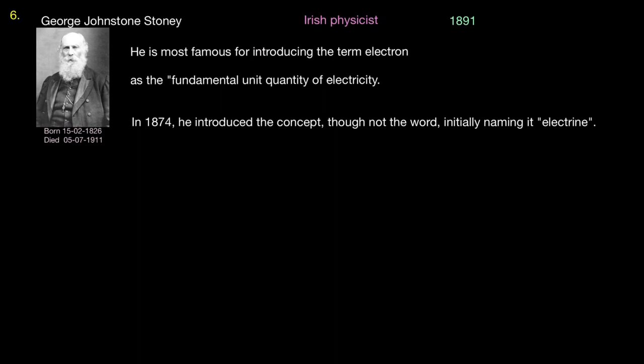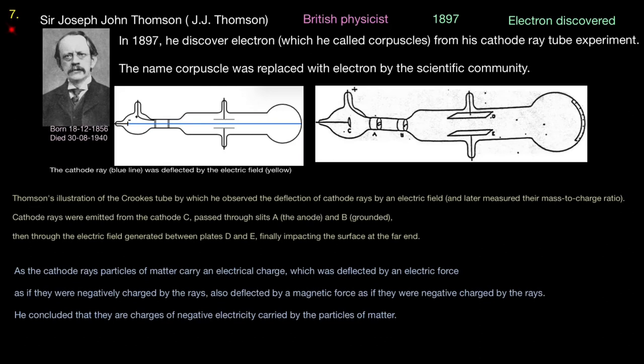In 1891, an Irish physicist, George Johnstone Stoney, he is most famous for introducing the term electron as the fundamental unit of electricity. At this point, electron has not been discovered yet. In 1874, he introduced the concept, though not the word, initially naming it electrine.